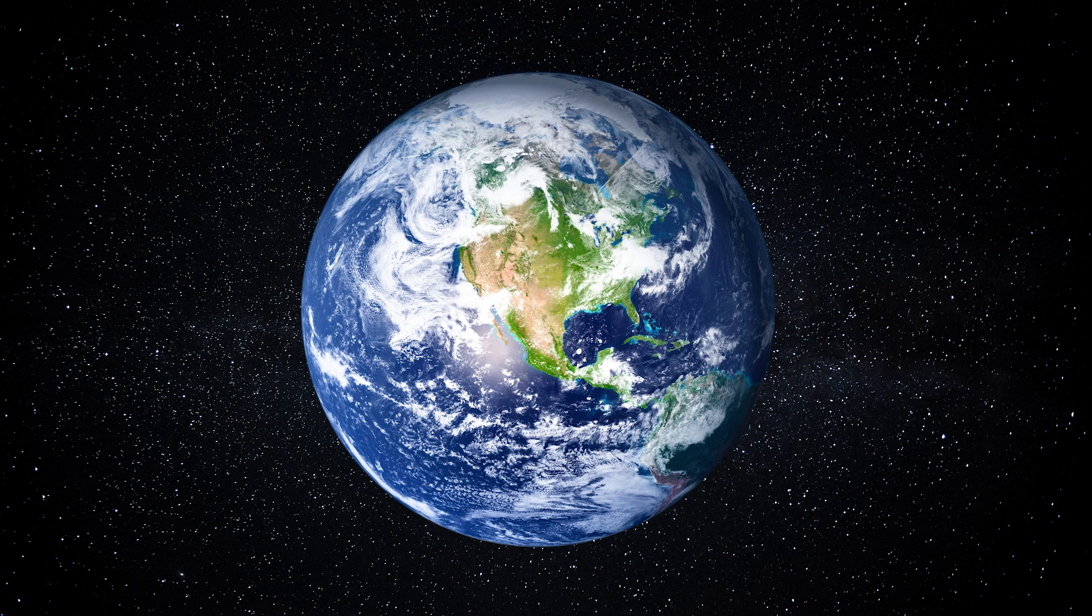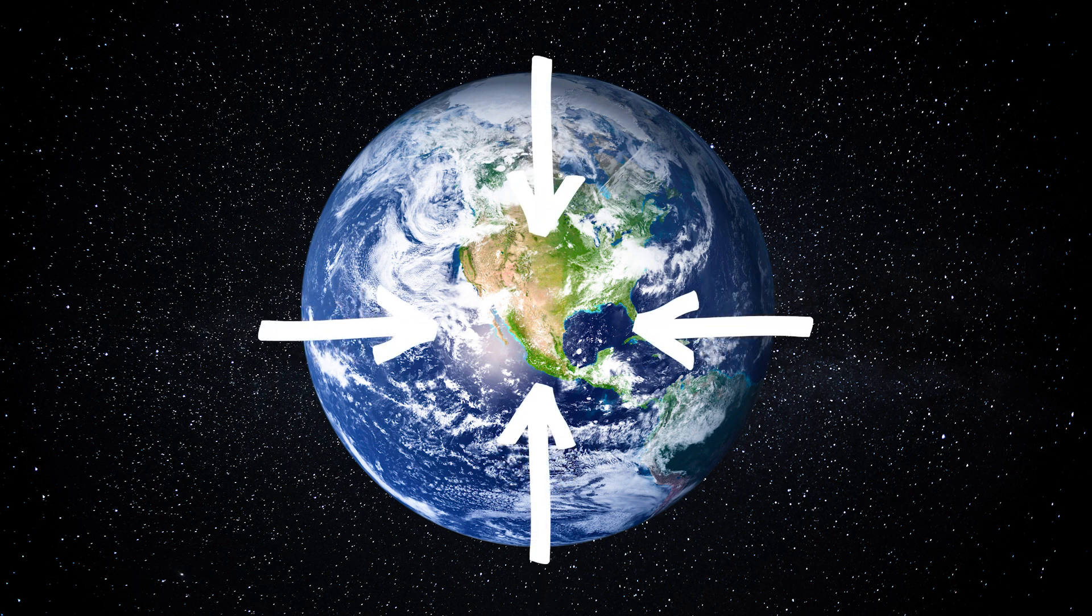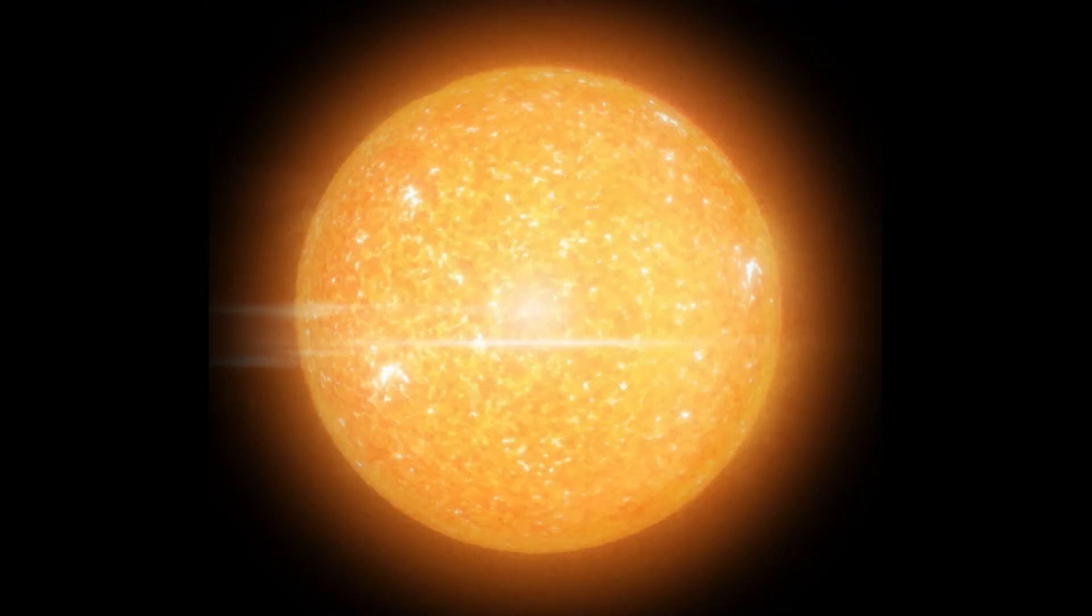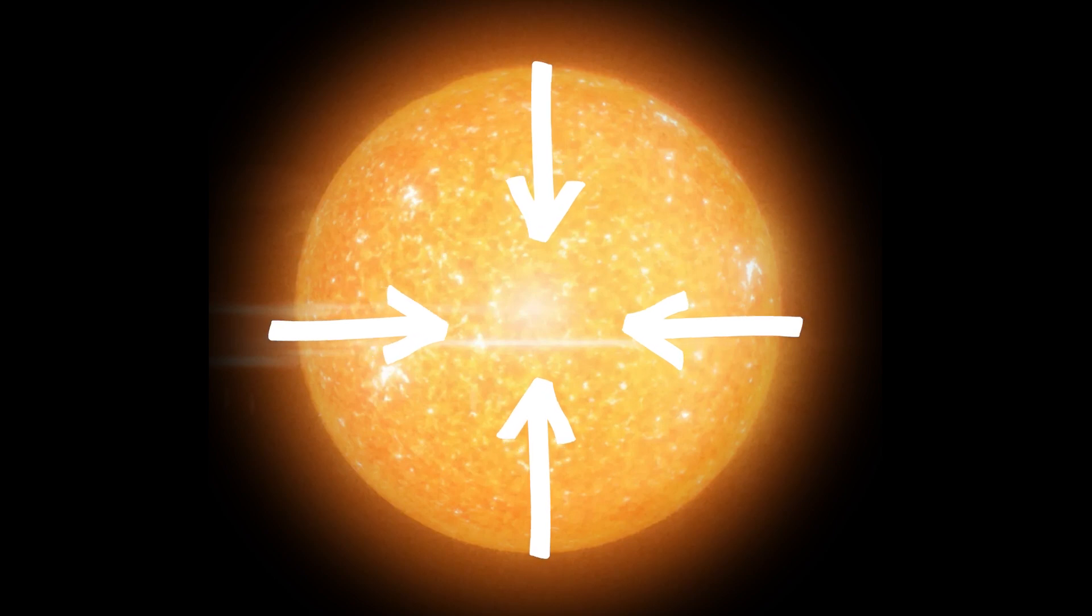Remember, Earth is round. Gravity pulls you in toward the center of the Earth. This matters for stars because Earth is not the only place that has gravity. Stars also have gravity, and they are also round. In a star, gravity pulls everything in toward the center of the star. You can think of this like a big smush. The gases a star is made of smashed together in the center of the star.